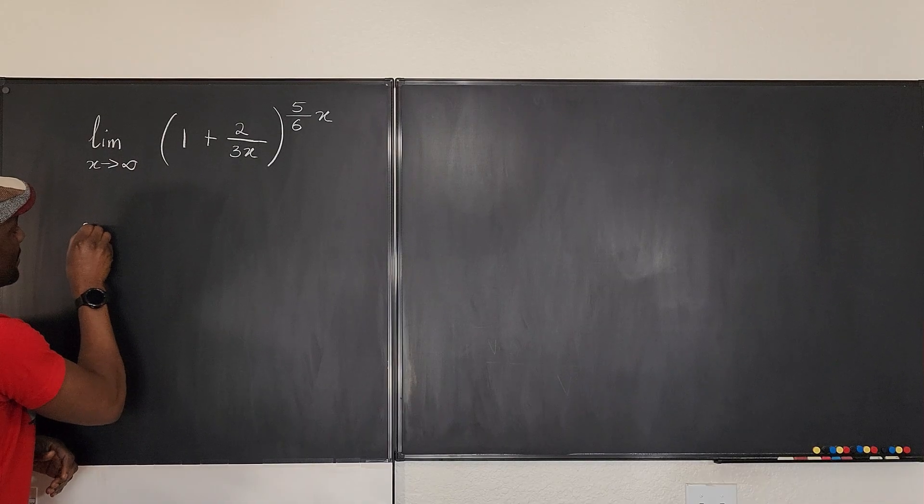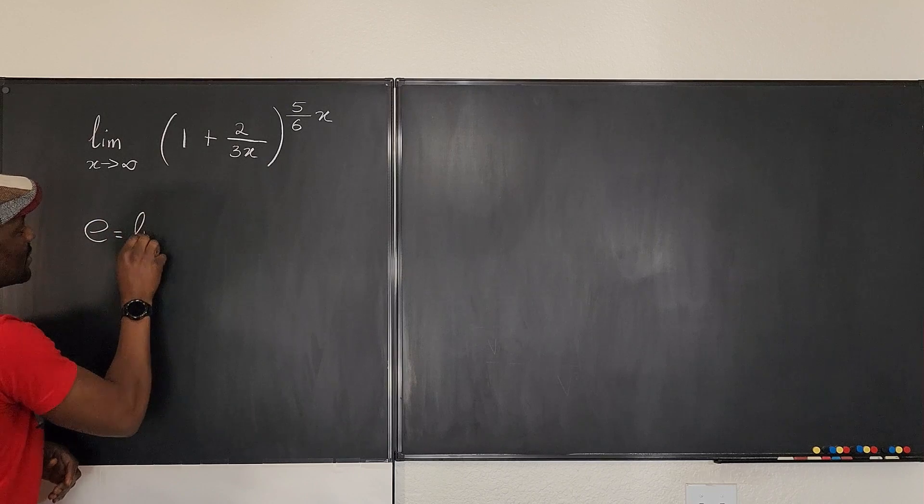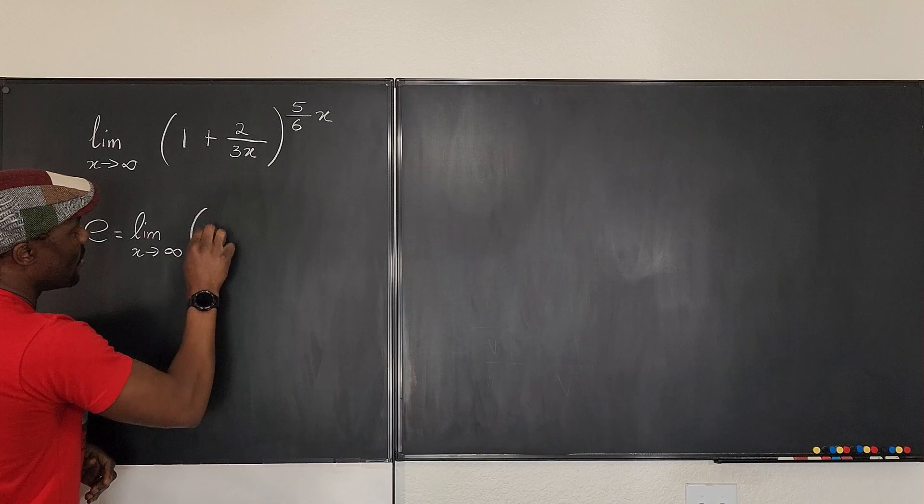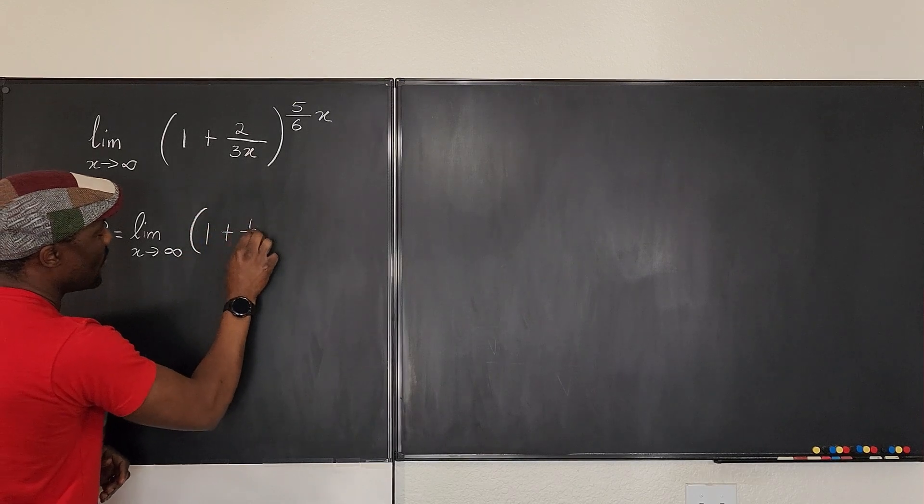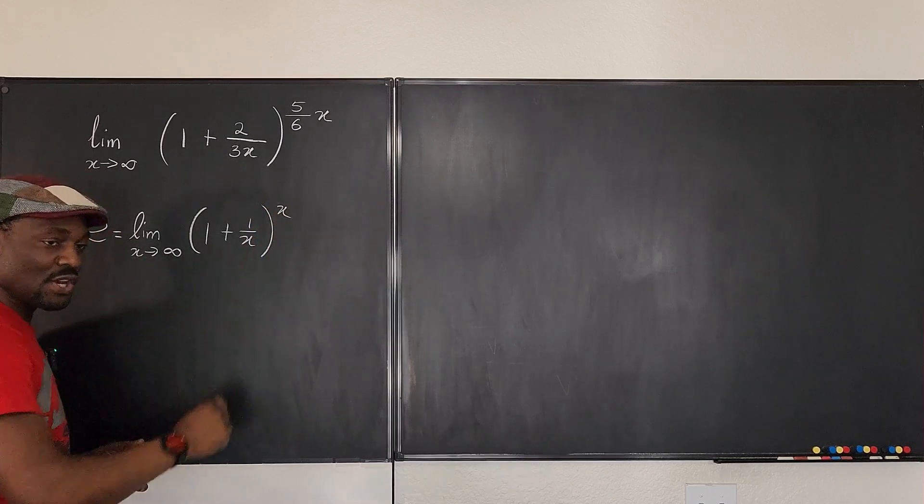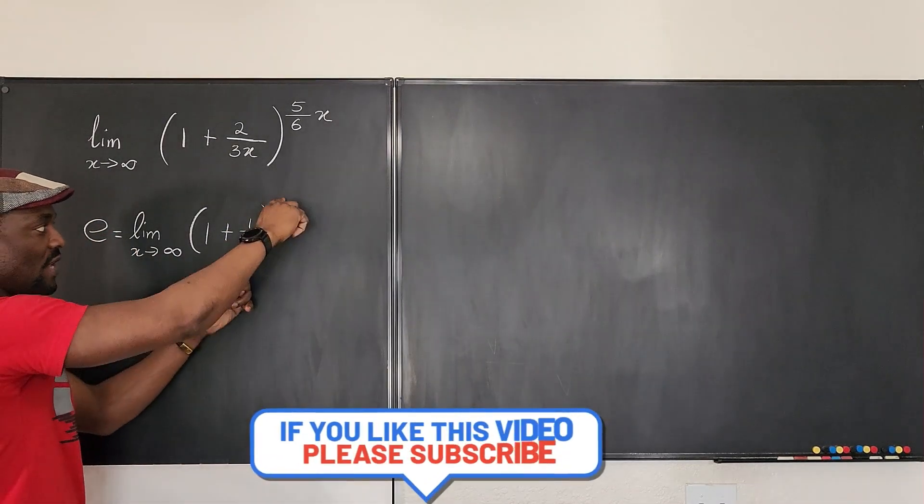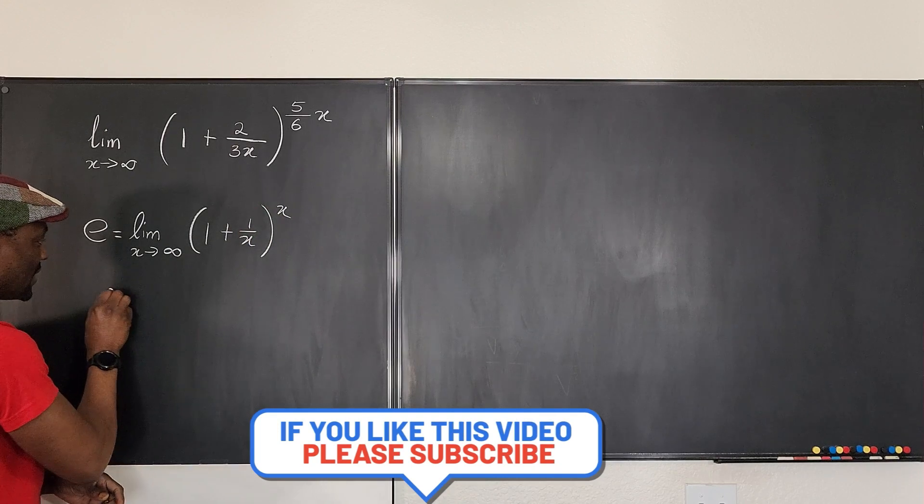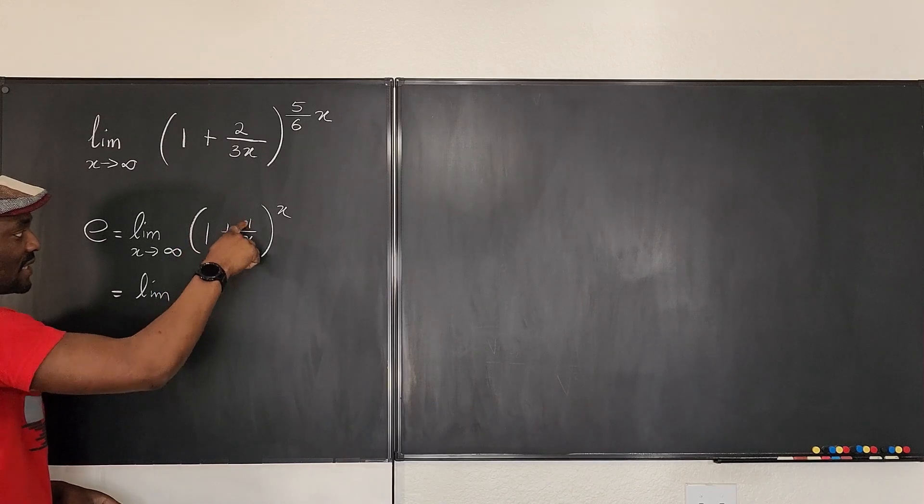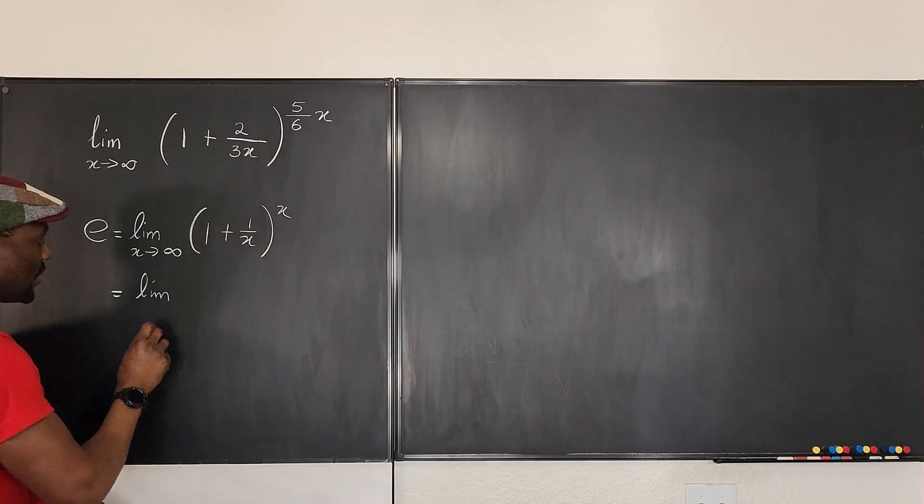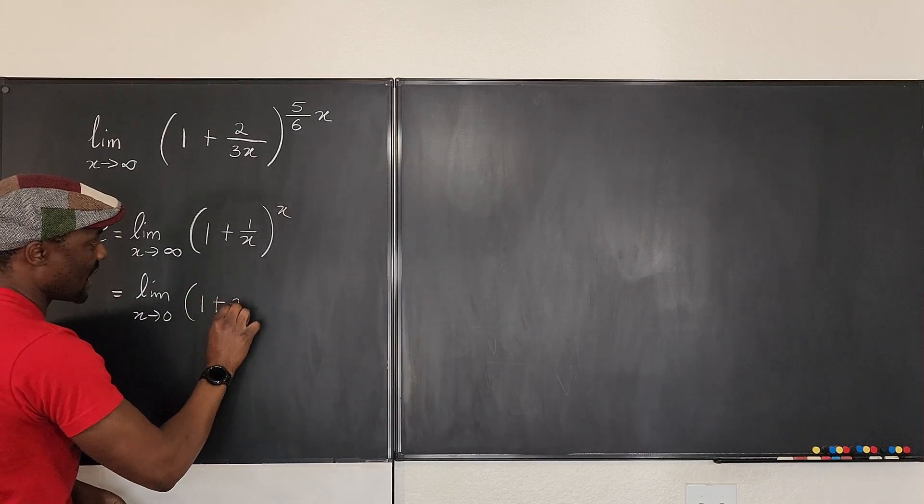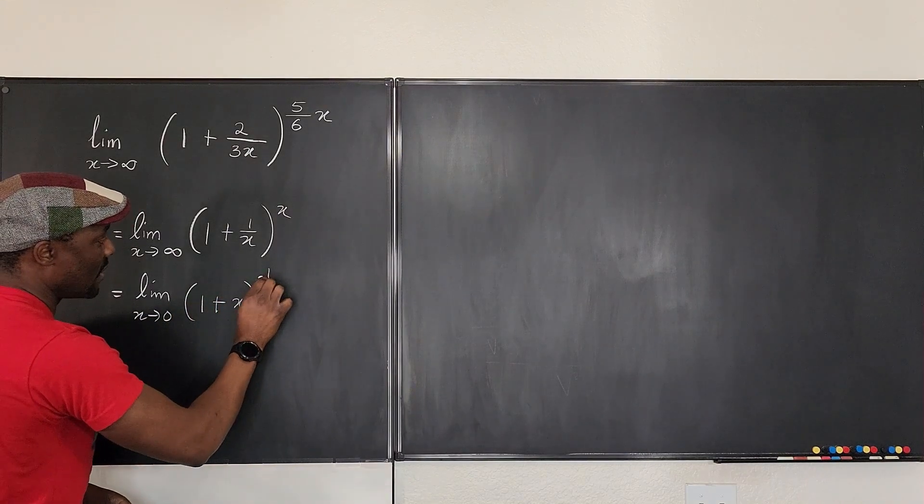Let's say that our definition of E is the limit as x goes to infinity of 1 plus 1 over x raised to power x. This you have to know. You can write it this way or you can flip these two. So it's the same thing as the limit. When you flip these two, because as this goes to infinity, this expression goes to zero, you can say it is as x goes to zero of 1 plus x raised to power 1 over x.